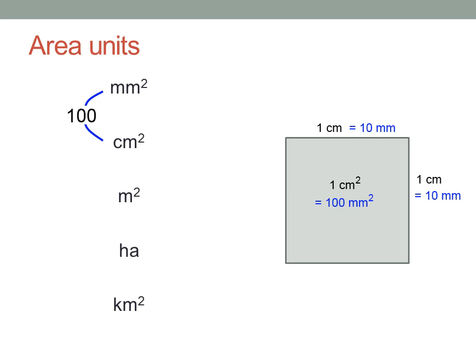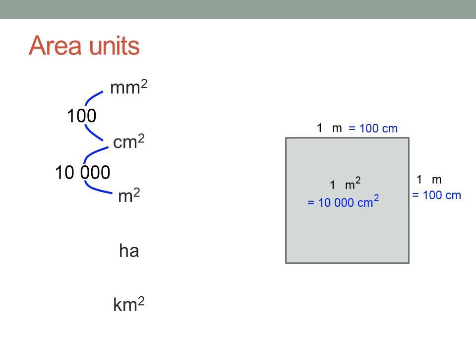Let me show you that again with the next pair. Imagine now that this square is one metre by one metre, making an area of one square metre. How many square centimetres is that? It's one hundred centimetres on each side, and one hundred times one hundred is ten thousand. One square metre is ten thousand square centimetres.